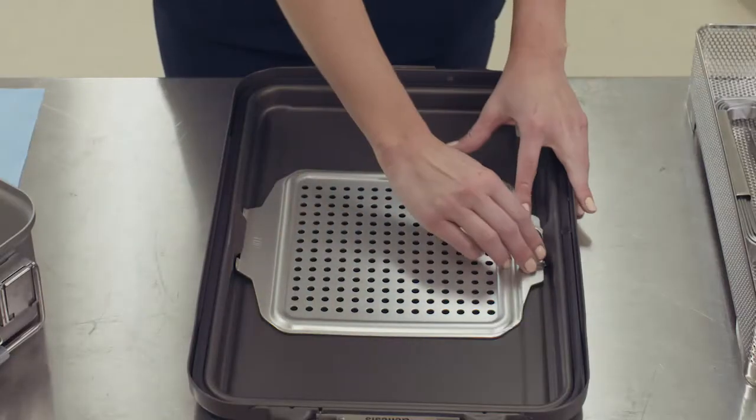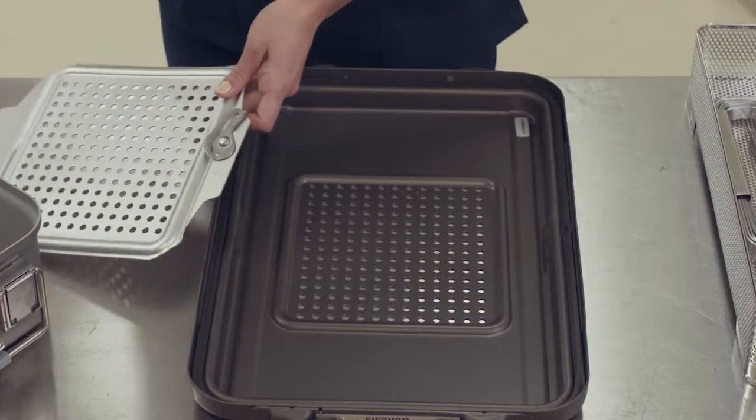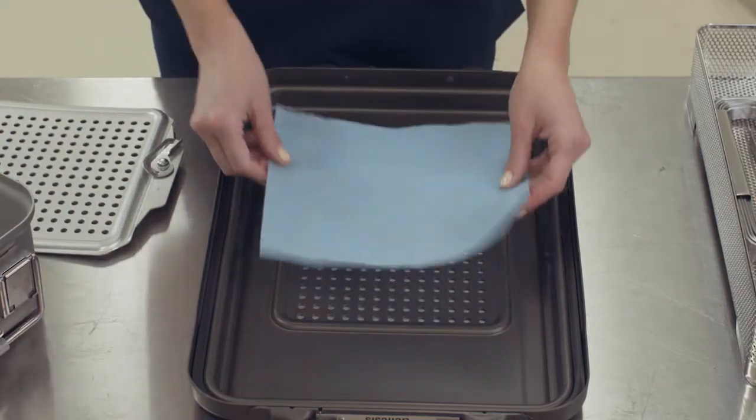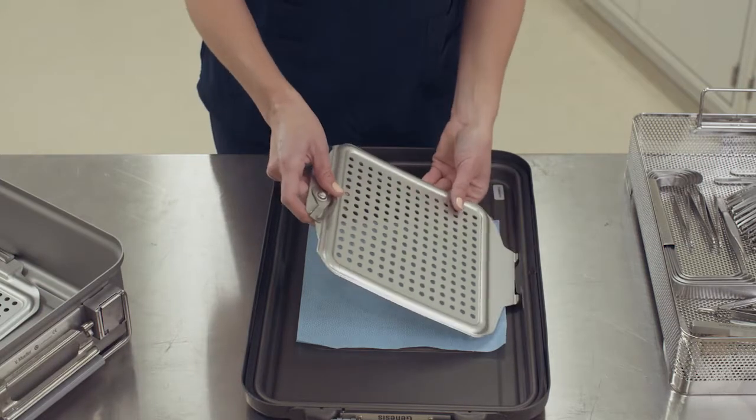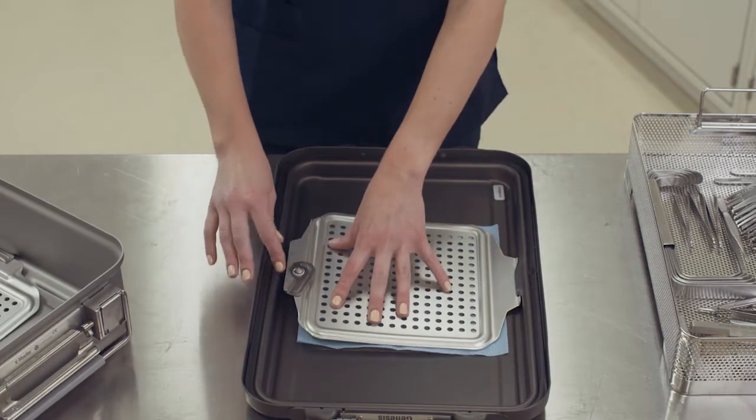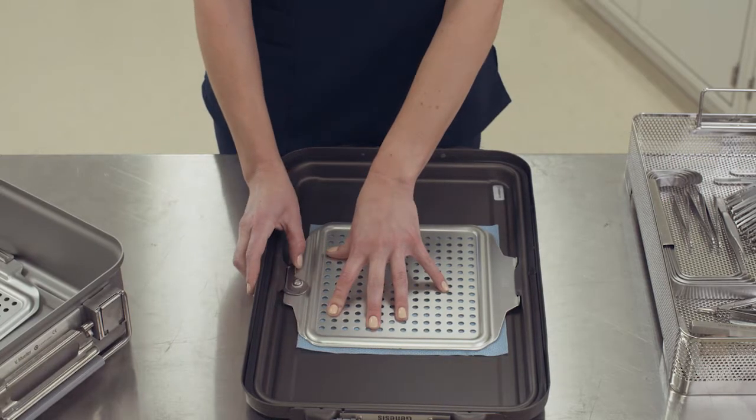If the optional protective plate is not used in the lid, place a new filter directly over the perforations. As was done in the container lid, place the retention plate on top of the filter. Apply downward pressure to the plate and simultaneously rotate the lever toward the side of the container. Make sure the lever is rotated completely and the retention plate is locked firmly in place.